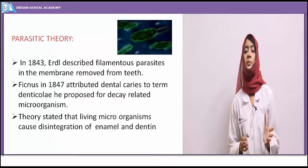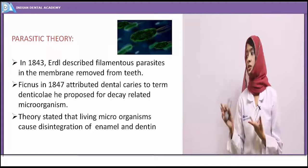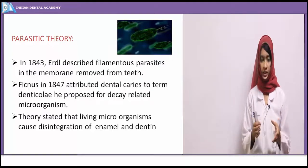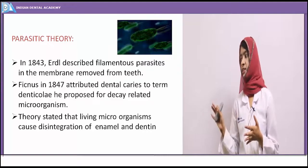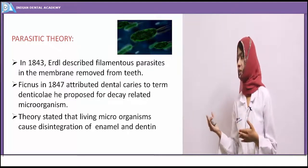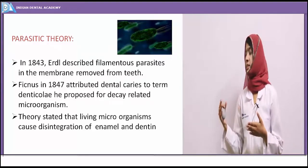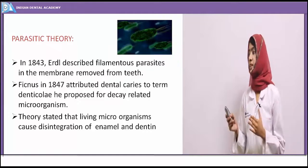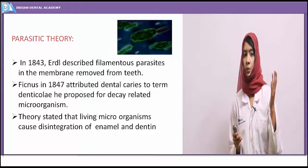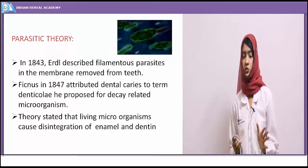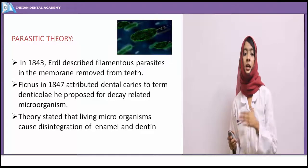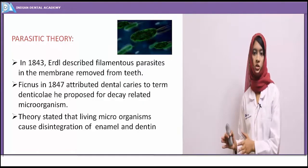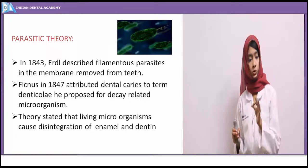The parasitic theory: for the first time, microorganisms were attributed as causing caries. In 1843, Erdel studied a membrane removed from the covering of the teeth and demonstrated the presence of filamentous parasites. Other authors then gave names for these parasites — 'denticolae,' meaning decay-related organisms. While the previous theory stated acids were produced by fermentation, the parasitic theory states that organisms alone are responsible for disintegration of enamel and dentine — these microorganisms are responsible for destruction of teeth.